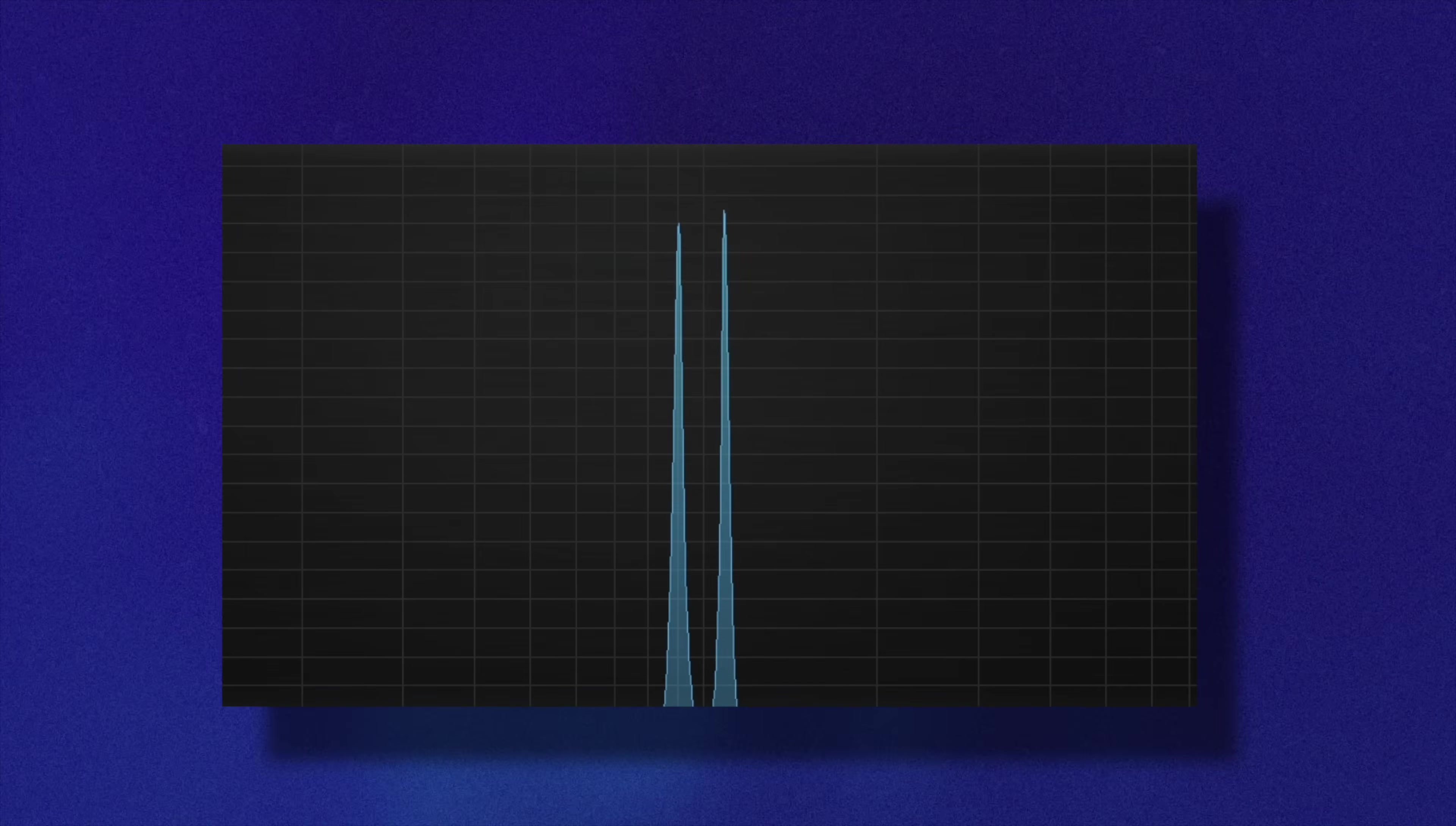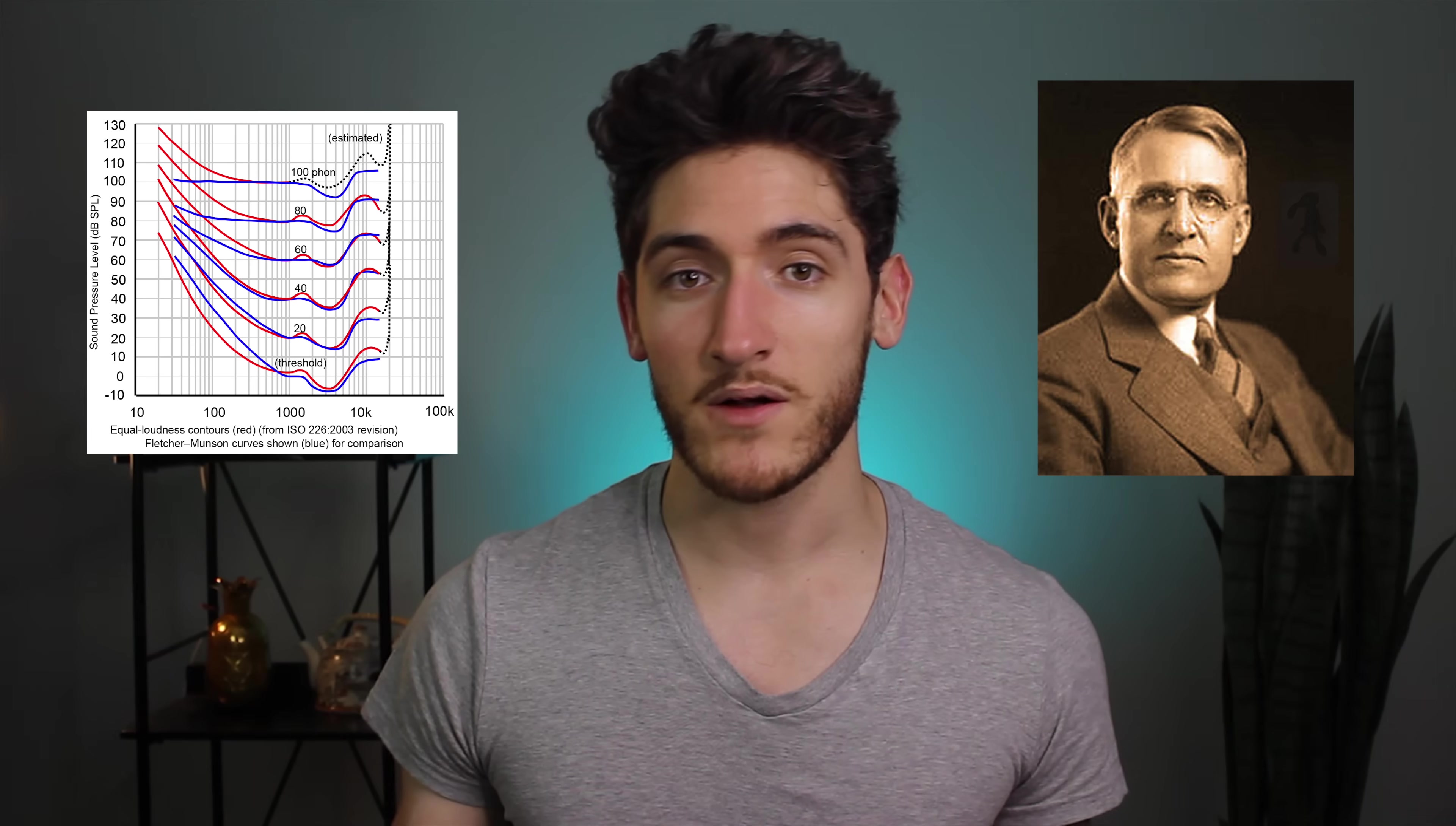If there are two tones very close together, it's hard for us to differentiate them, and they get kind of smeared out. By the way, this guy is the same Fletcher behind the Fletcher Munson curves that everybody likes to talk about.